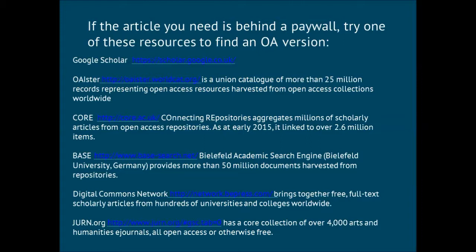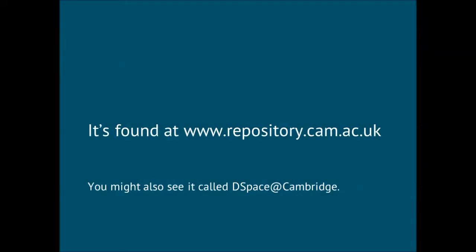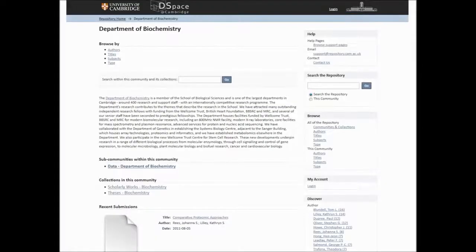One place you'll find stuff is the University Repository. If you go to repository.cam.ac.uk, that's where you'll find it. In the past you may have heard it called DSpace at Cambridge. We're actually in the middle of upgrading and rebranding the repository, so at the moment it still looks quite old-fashioned. Hopefully in the next couple of months it should be modernized — something from the 21st century rather than the 20th.